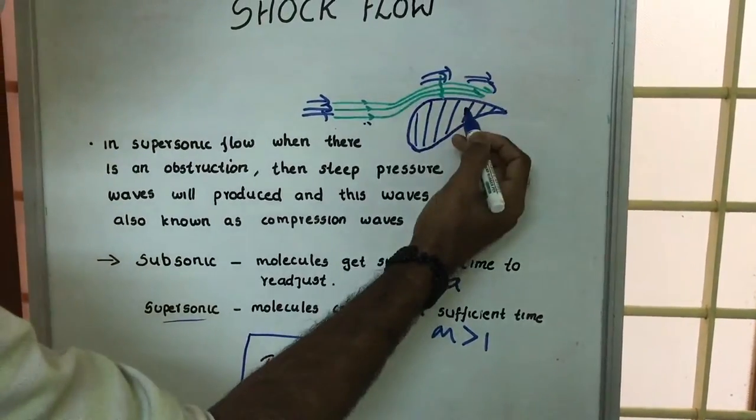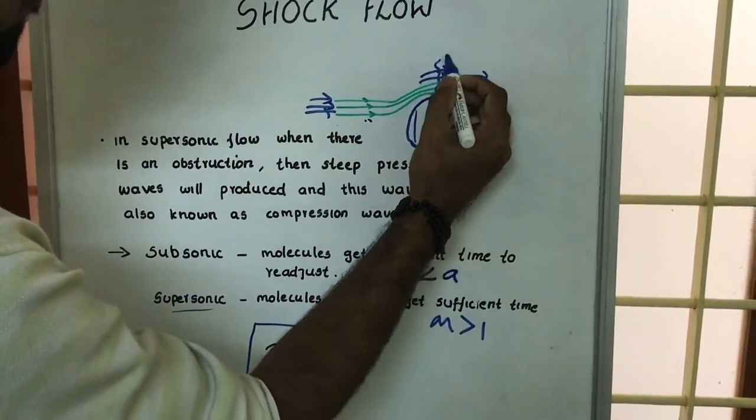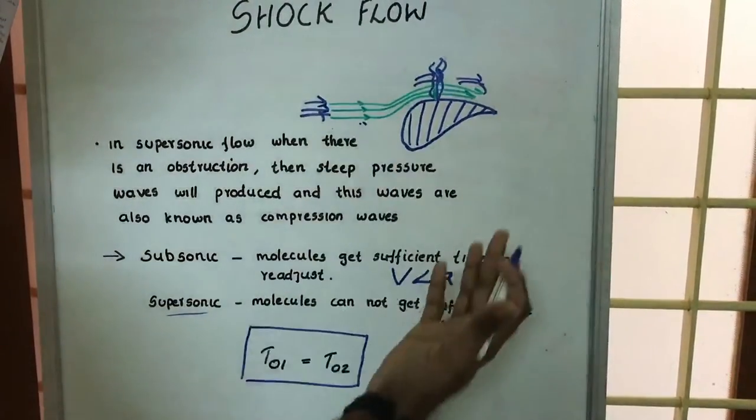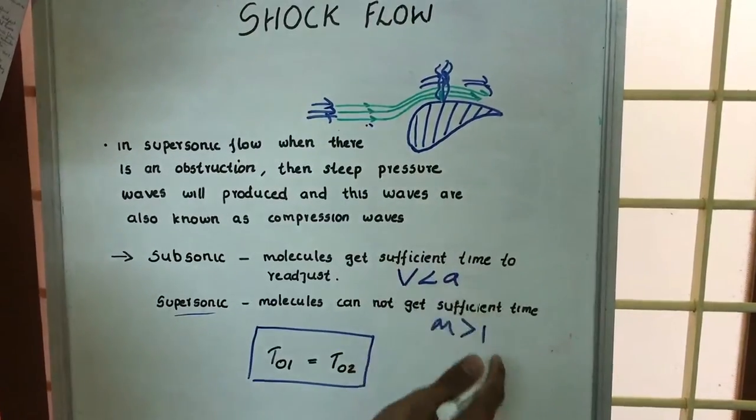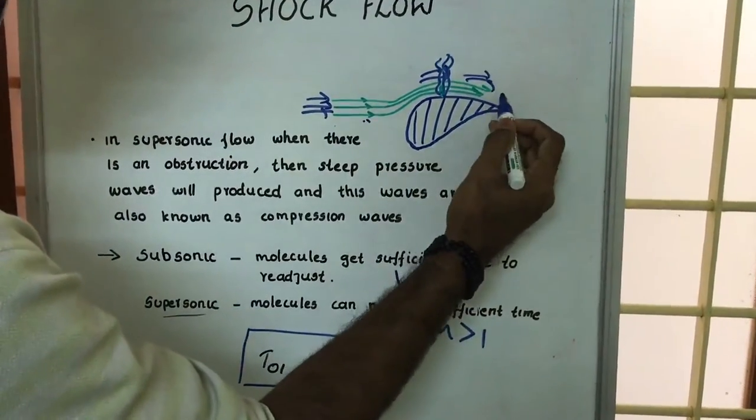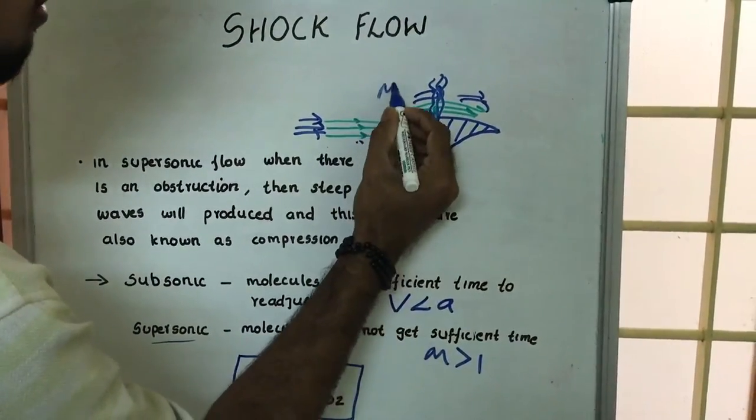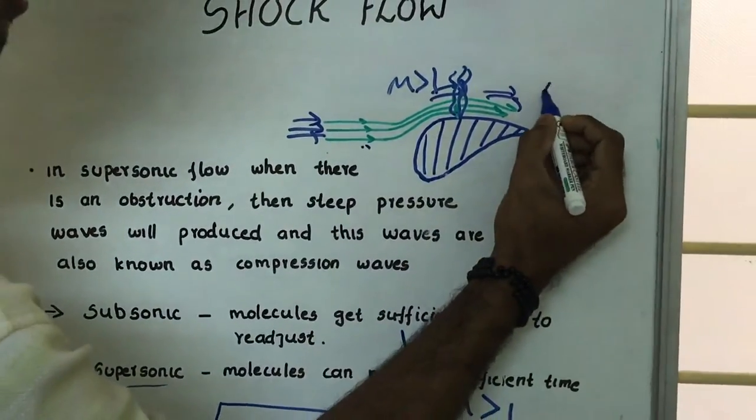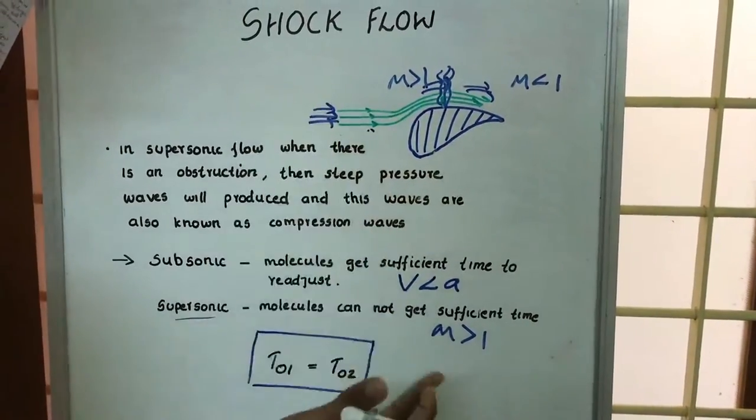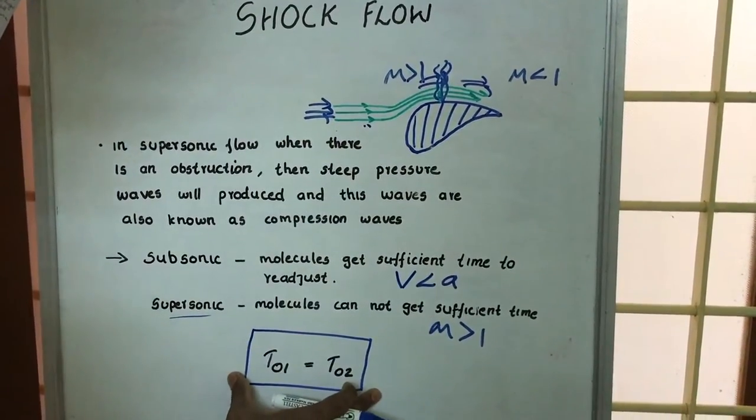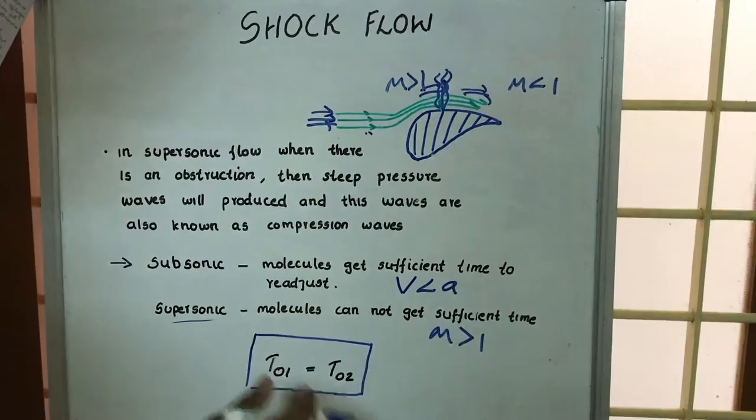Here there will be production of shock waves. After the shock waves there will be a sudden decrease in velocity, or after the shock waves the flow will be subsonic. Here you can see M greater than 1, M less than 1.